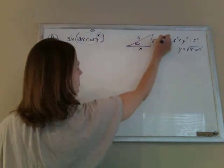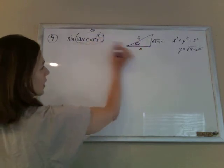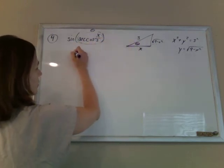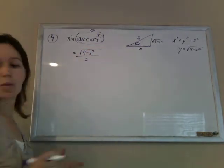So now, if this y is the square root of 9 minus x squared, then I know that the sine of my angle is opposite over hypotenuse. So just square root of 9 minus x squared over 3, and that should be my answer.